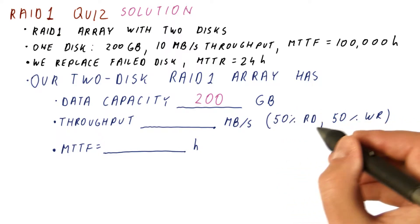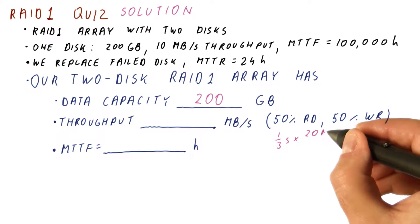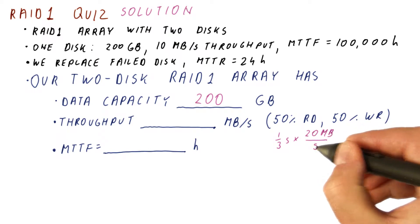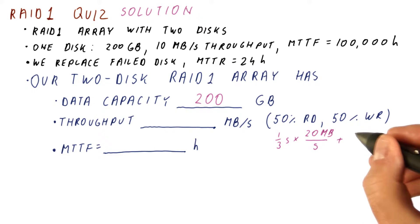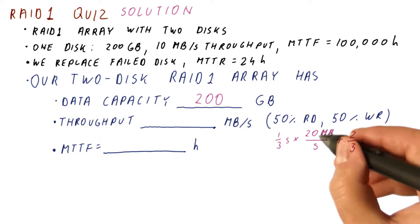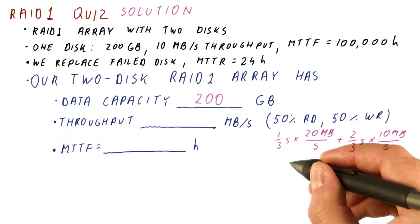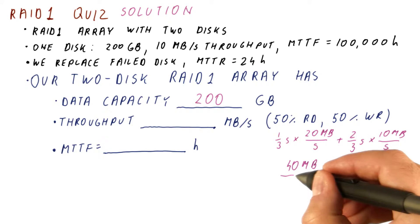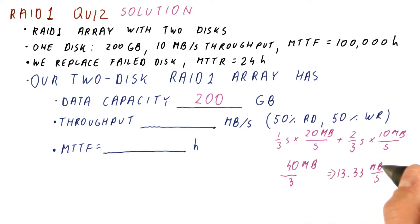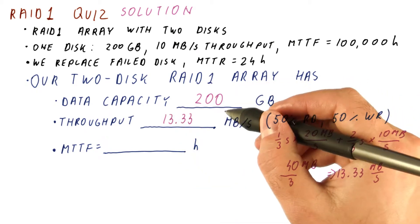In the one-third of a second that we've been doing reads, we were getting a 20 megabyte per second throughput because we were using both disks. In the two-thirds of the second when we were doing writes, we were getting only 10 megabytes per second. So overall during this one second using the RAID1 array, we ended up getting a throughput of 40 over 3 megabytes, which gives us a throughput of 13 and a third megabytes per second. Because in one second, we managed to access 40 over 3 megabytes. So the answer here is 13.33.